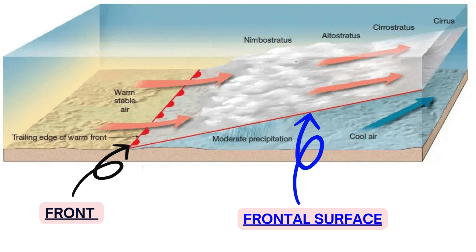Warm front: as the warm front passes, temperature will gradually rise since warm air is replacing cold air. In the passage of a warm front also, air pressure will fall, as rising air will be accompanied by low pressure. Ahead of the front will be stratiform clouding with light precipitation. The approach of a warm front can be predicted by high cirrus clouds hundreds of kilometers ahead of the front. Weather produced by the passage of a warm front is less vigorous as compared to the passage of a cold front.